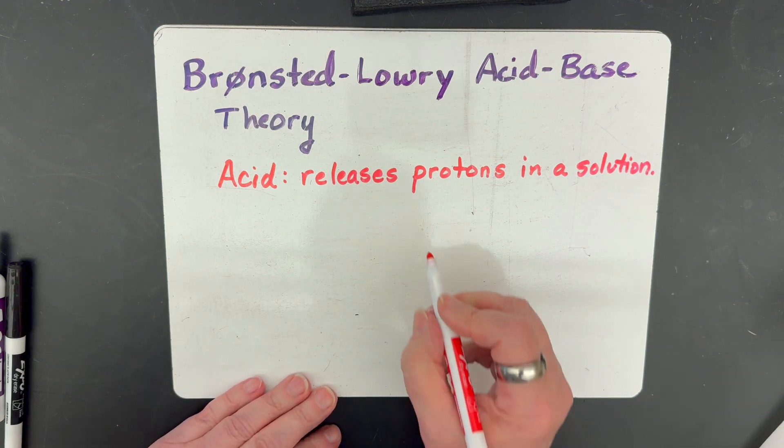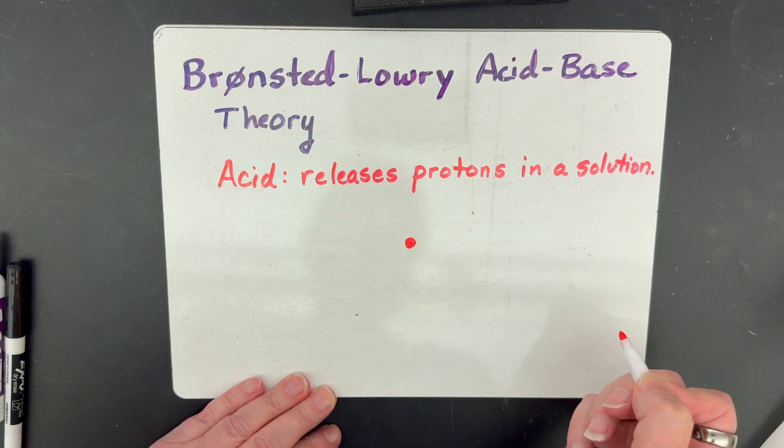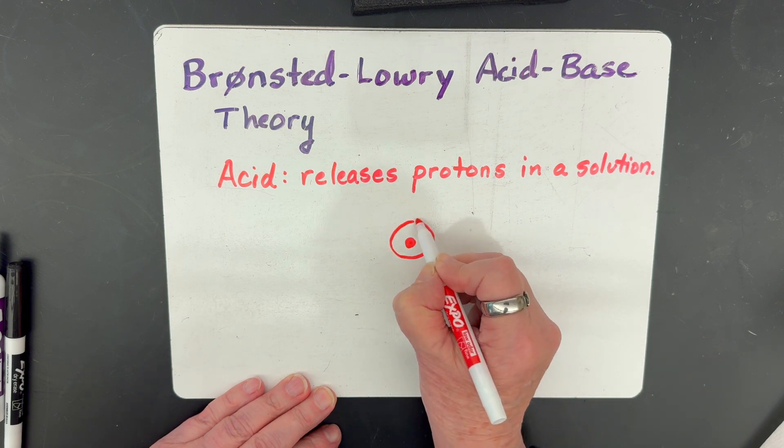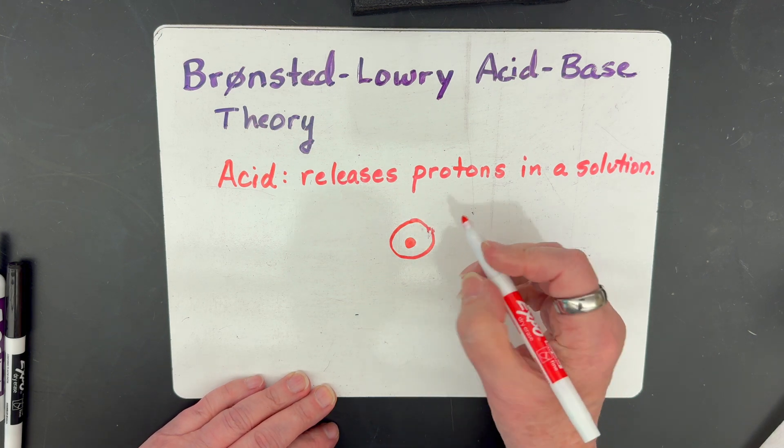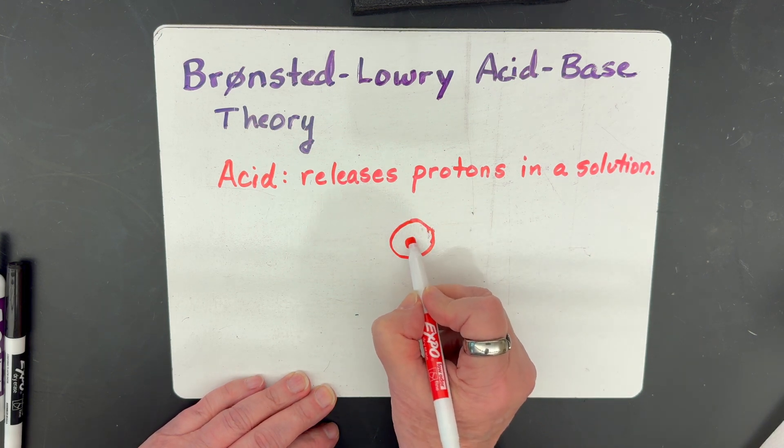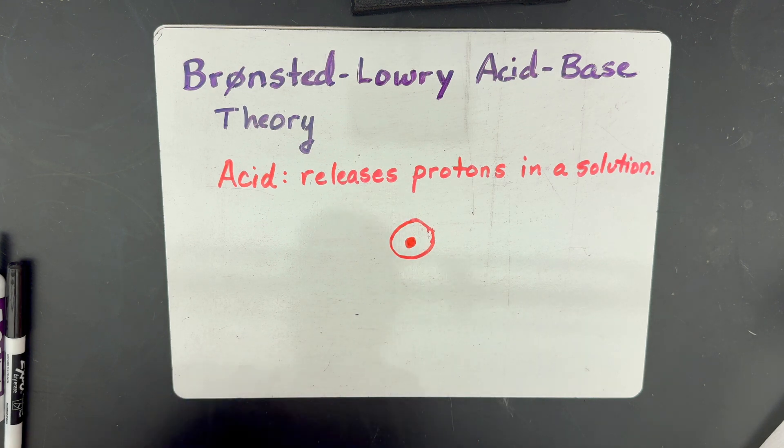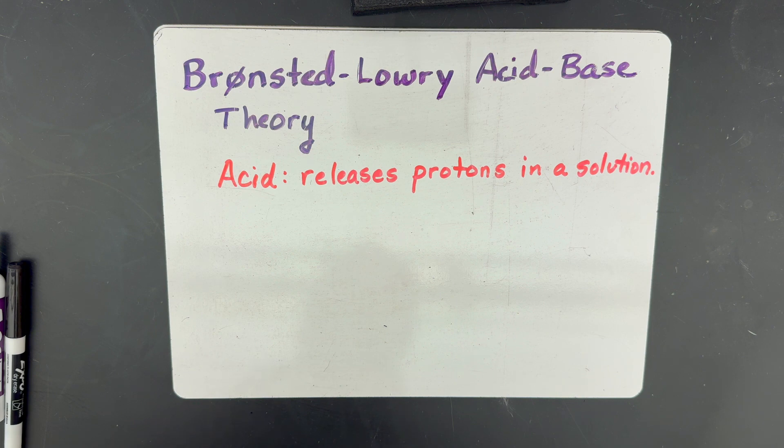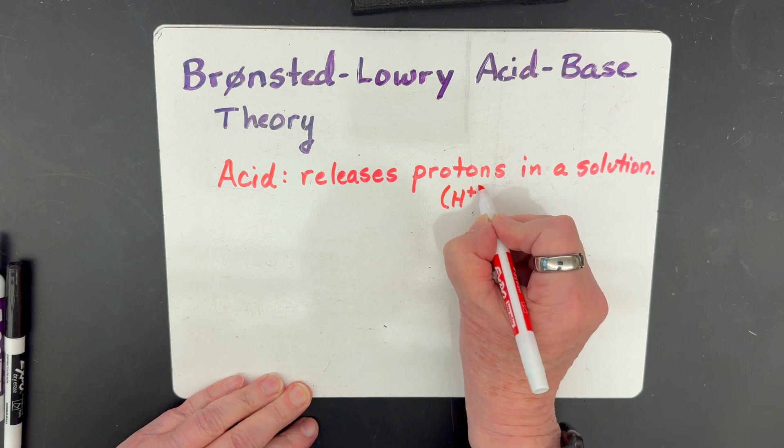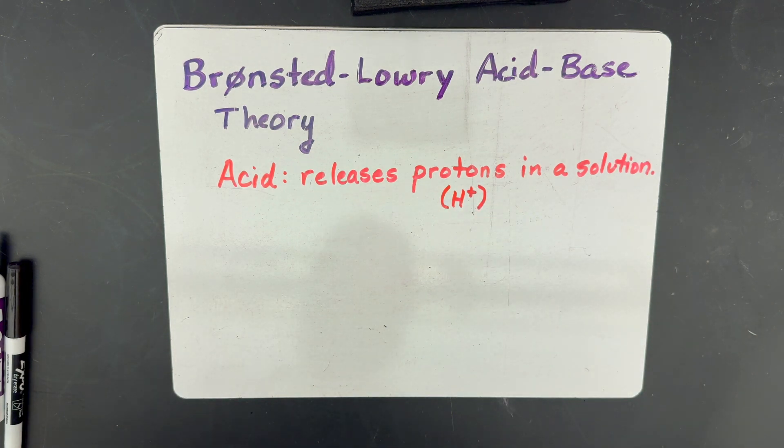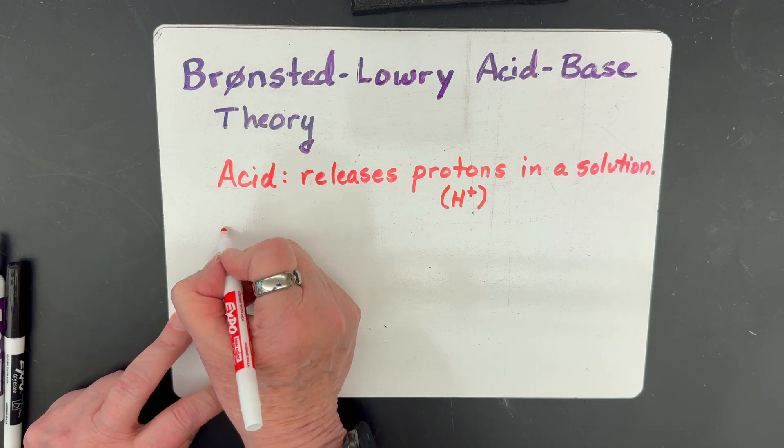If you think about hydrogen, hydrogen has one proton in its nucleus and one electron outside of its nucleus. A hydrogen ion is H+, which means that this outer electron has been removed and now it's just a proton. The theory says that acids release protons in a solution. Protons are actually hydrogen ions. So it's really saying the same thing as the Arrhenius acid theory also says. You can think of it the same way, that hydrogen ions are going to be released in a solution.